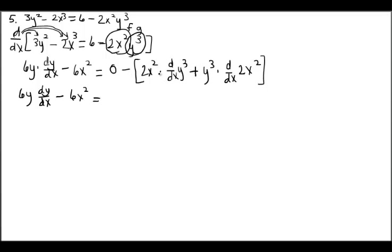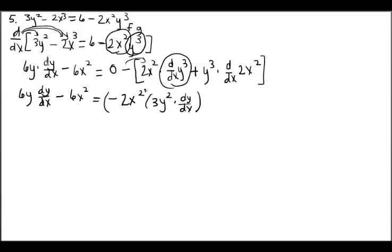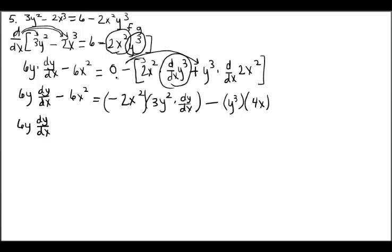I'm going to distribute the negative and at the same time perform the differentiation. So I'm going to have minus 2x squared, and then this derivative will be times 3y squared — variables disagree — times dy/dx. Then distributing that negative for the other part of the product rule, I have y cubed times the derivative of 2x squared with respect to x, which is just 4x. The variables agree there.